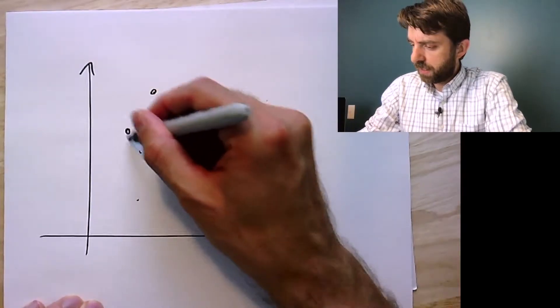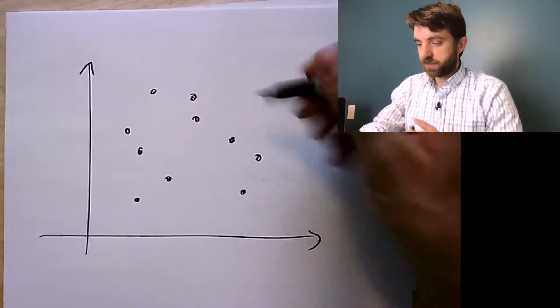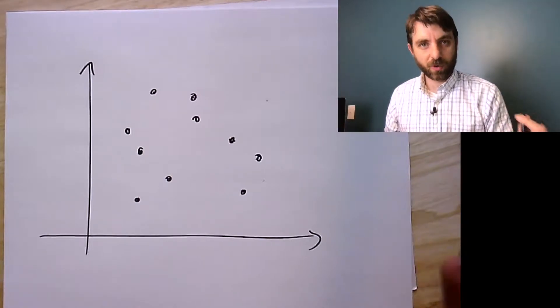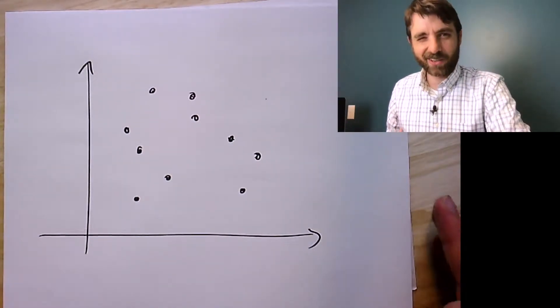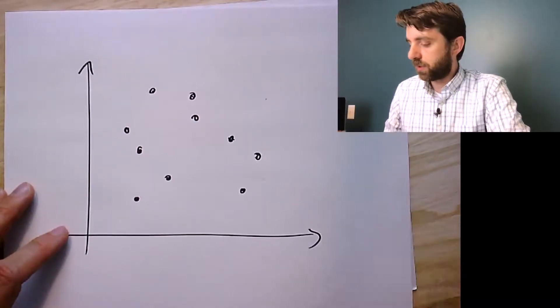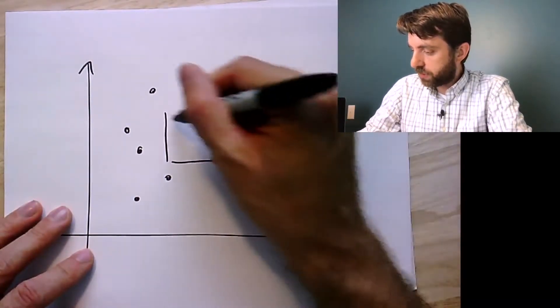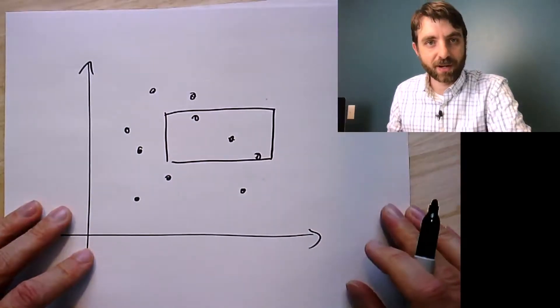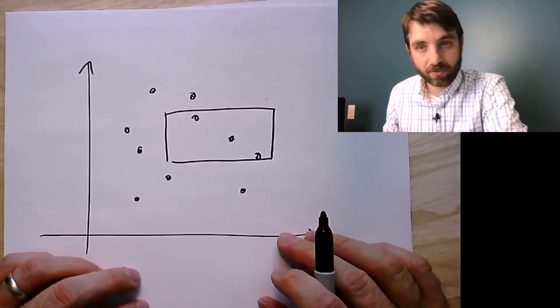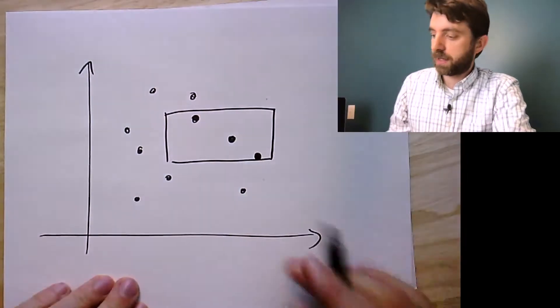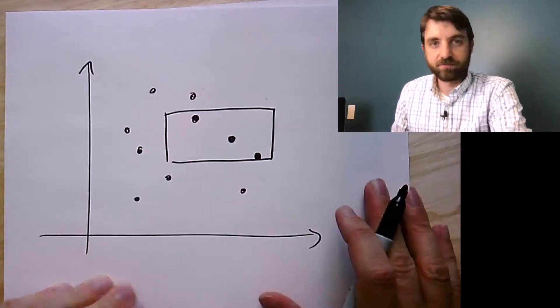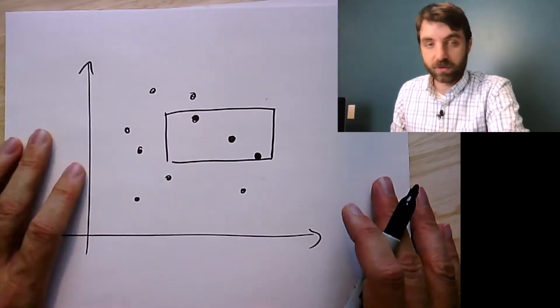So I have these points in the plane, and I'm going to build a data structure that starts from this set of points, and it can support queries, and the queries are orthogonal range search queries, and orthogonal range, it's just a rectangle. So I give it a rectangle, and the output should be all the points inside this rectangle. So if I would input this rectangle as my query, I would get these three points back. And then I should be able to support an arbitrary rectangle.